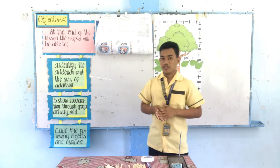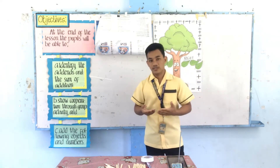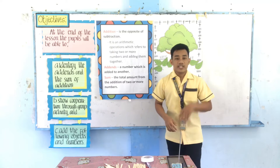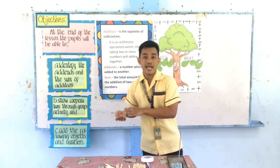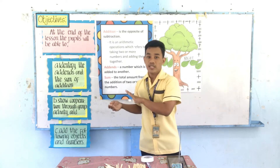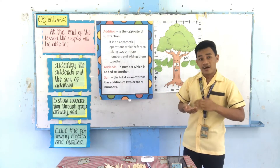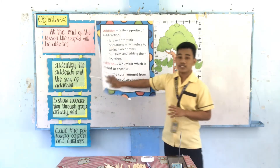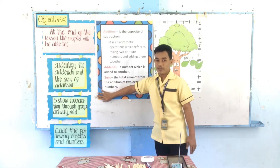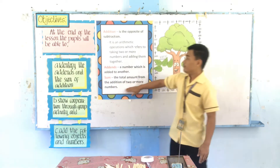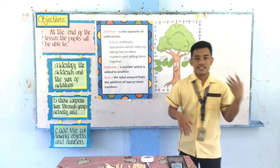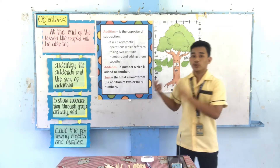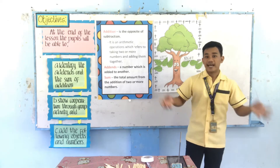Now, what is addition? Any idea what addition is? Addition is the opposite of subtraction. Yesterday we talked about subtraction — taking away one amount from another. Addition is an arithmetic operation that refers to taking two or more numbers and adding them together. What is addition again? Addition is an arithmetic operation that refers to adding two or more numbers together.